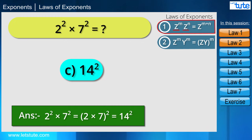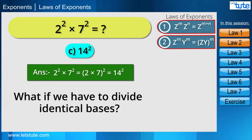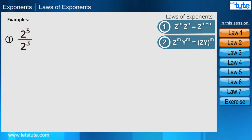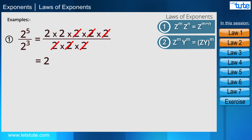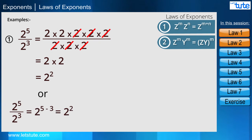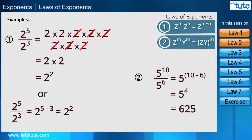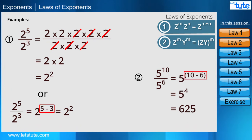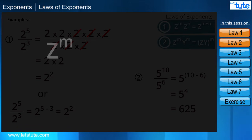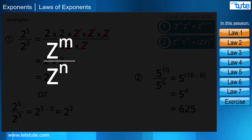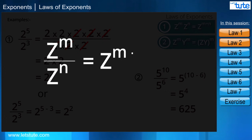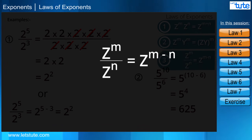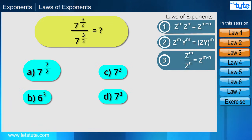What if we have to divide identical bases? To divide identical bases, we subtract the exponents: z raised to the power m divided by z raised to the power n equals z raised to the power m minus n. This is our third law of exponents. For example, 7 raised to the power 9/2 divided by 7 raised to the power 3/2.